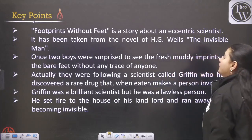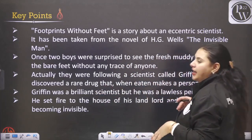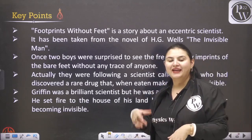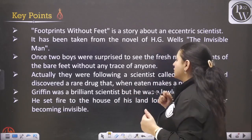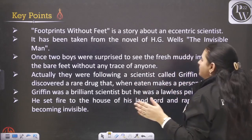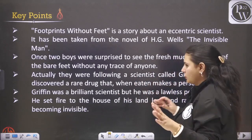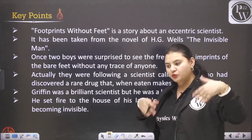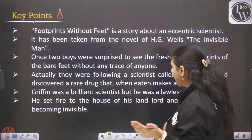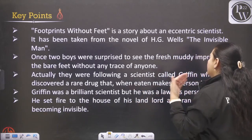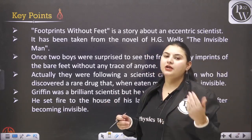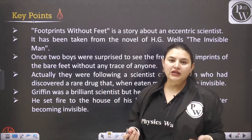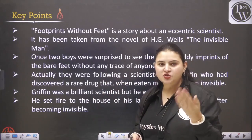Key points: Footprints Without Feet is a story about an eccentric scientist. It has been taken from the novel The Invisible Man by H.G. Wells. Two boys were surprised to see fresh muddy imprints without any trace of anyone. They were actually following a scientist called Griffin who had discovered a rare drug that when eaten makes a person invisible. Griffin had done many experiments and was able to make the human body transparent by consuming those drugs himself.